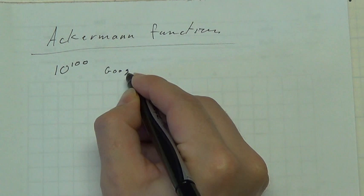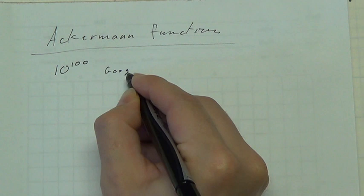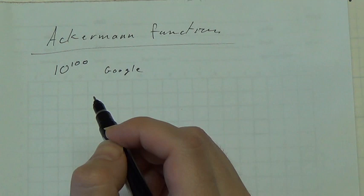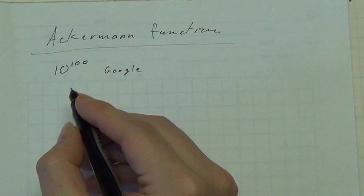This number is called a Google. And to give you the sense of a Google, think of how many molecules there are in a balloon full of air. If you know anything about chemistry or physics, you know there's a whole lot. In fact,